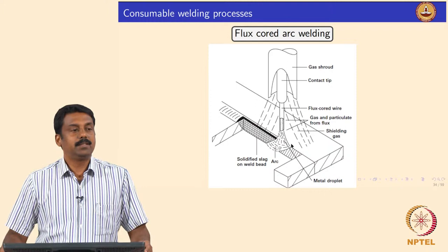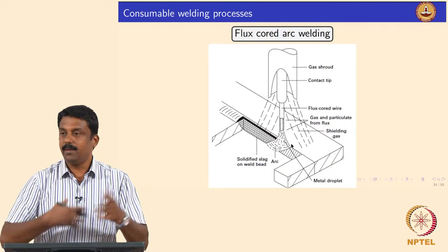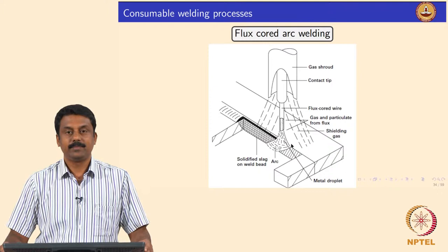I will just give an introduction and then we will see in the next class. The main disadvantage of using a stick electrode or MMAW electrode is continuous feeding — you have to use a stick, and once the stick is consumed, you need to replace it. By replacing the stick with another form of electrode, we can make it a continuous process that can be automated.